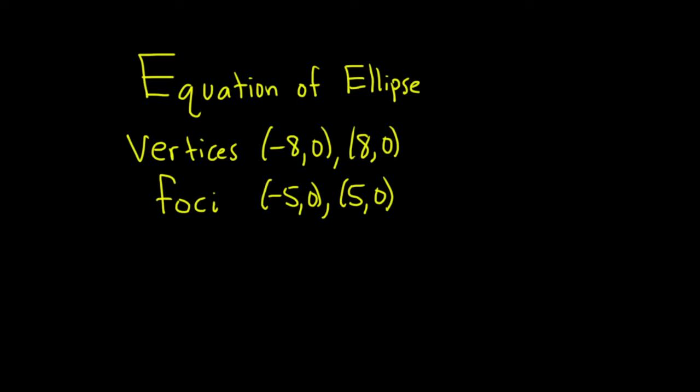Hello, in this problem we're going to find the equation of an ellipse. We're given the vertices (-8, 0) and (8, 0), and the foci (-5, 0) and (5, 0).